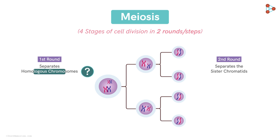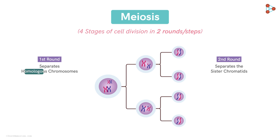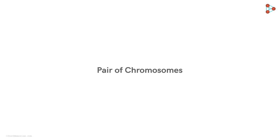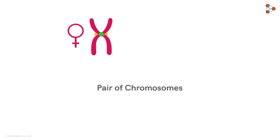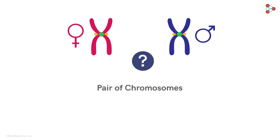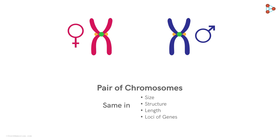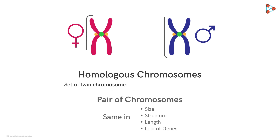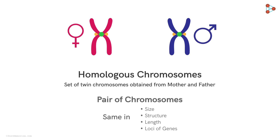We are familiar with the terms homologous chromosomes and sister chromatids, but let's revise them. The term homologous means having the same relation, position, or structure — here it represents two chromosomes forming a pair, one from mom and one from dad. Not any two chromosomes can form a pair; the chromosomes must be the same in size, structure, length, and even the loci of their genes. Thus, homologous chromosomes are the set of twin chromosomes, one obtained from mom and one from dad.